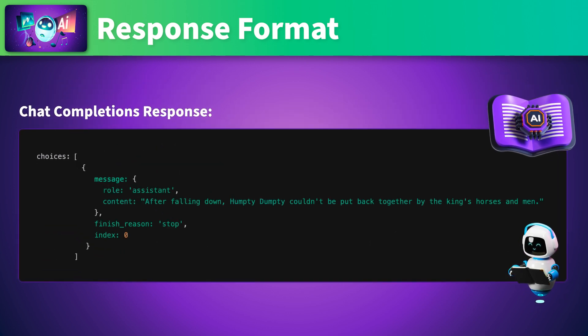We'll need to look at the Choices property of this response object to find the assistant's reply. Notice that the role is Assistant, which tells us this content represents the AI model's chat responses. The content property, which contains the AI response to our question, is also known as the completion — that's why this API is called the Chat Completion API.